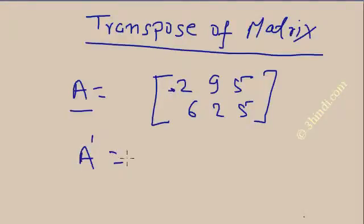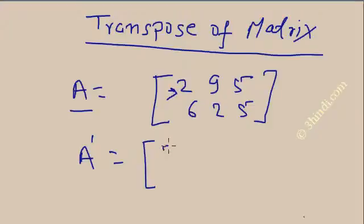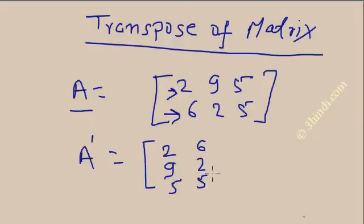It is denoted by A dash. So the first row [2,9,5] becomes the first column in A dash, and the second row [6,2,5] becomes the second column. So A dash is the transpose matrix of A.